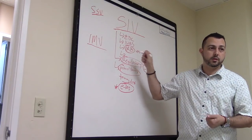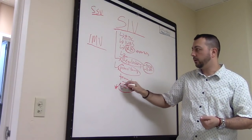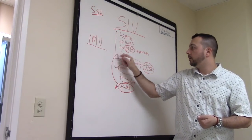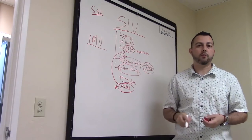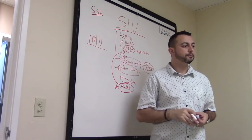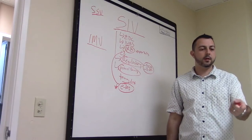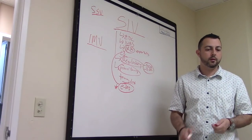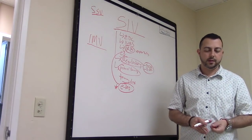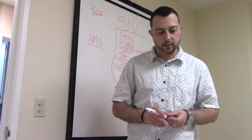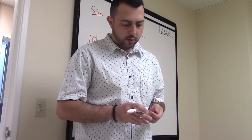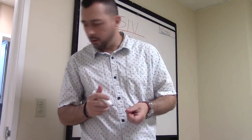So SIV in a nutshell: you meet with the PI, the most important thing is protocol training, you confirm all appropriate staff are on the delegation log, and you verify IRB approval is granted — which is part of the regulatory binder review and shows up on the monitoring report.